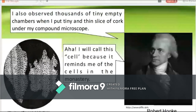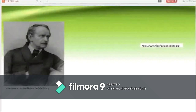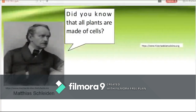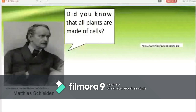Nearly 200 years later, in 1838, Matthias Schleiden, a German botanist who made extensive microscopic observations of plant tissues, described them as being composed of cells. Visualizing plant cells was relatively easy because plant cells are clearly separated by their thick cell walls. Schleiden believed that cells formed through crystallization instead of cellular division, and concluded that each one of plants was made up of cells.